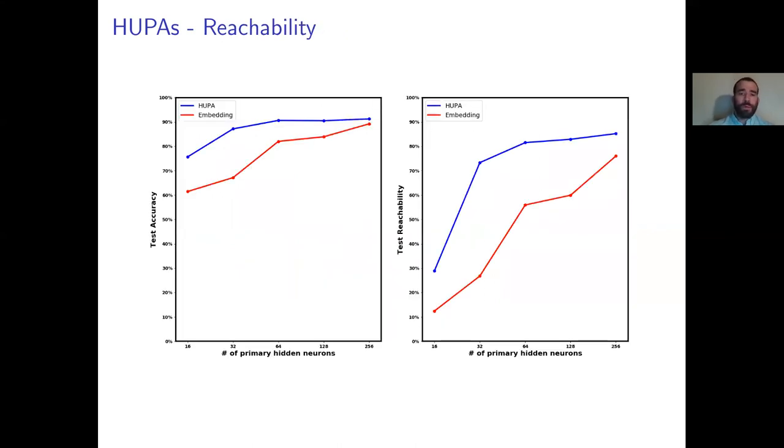We compare the two approaches on the navigation task in terms of reachability. This metric measures how often the agent reaches the goal using the generic policy and is more informative and strict than plain accuracy.